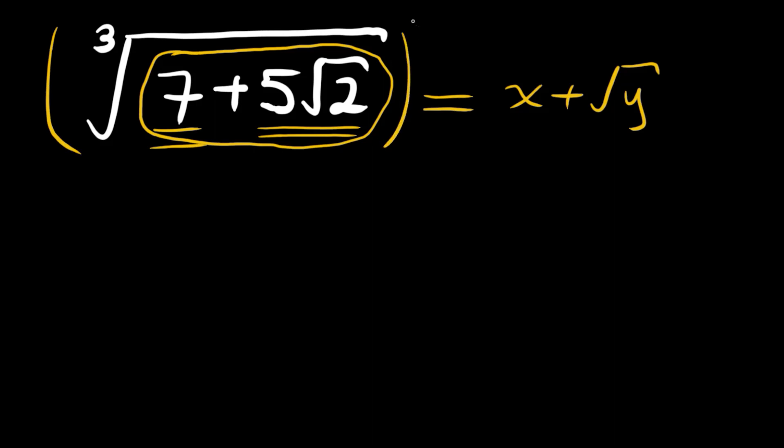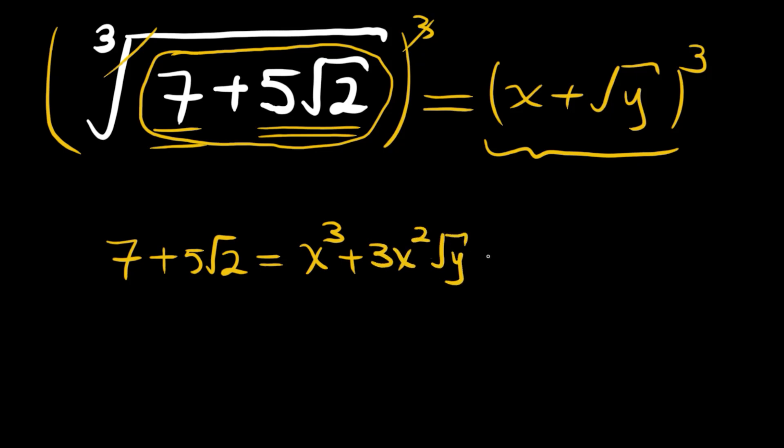Let's cube both sides and see what happens. The left-hand side, the cube root and cube will cancel, giving us 7 plus 5 root 2. On the right-hand side we will use the cube formula: x cube plus 3 times x square times root y plus 3 times x times root y squared plus root y cubed.